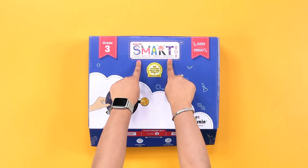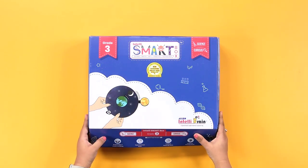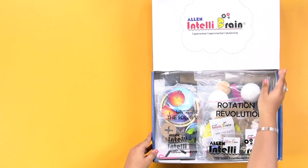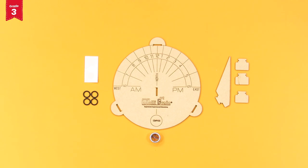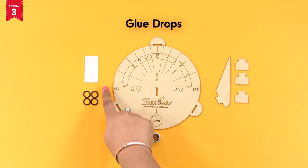From the IntelliSmart box, take out the rotation and revolution activity kit. From the kit, take out the sundial base, stand parts, shadow maker, o-rings, tiny compass, and glue drops.